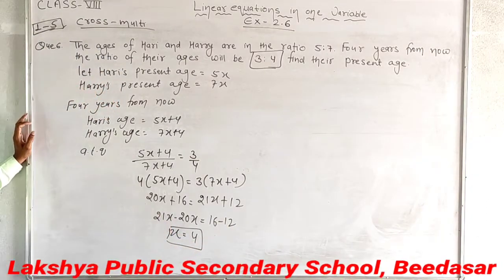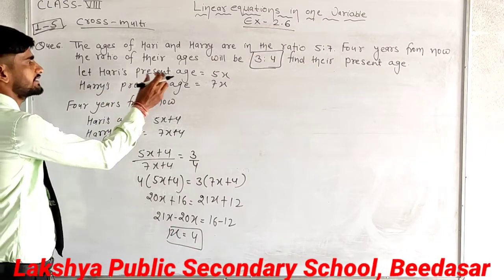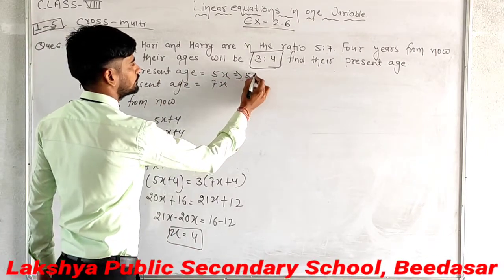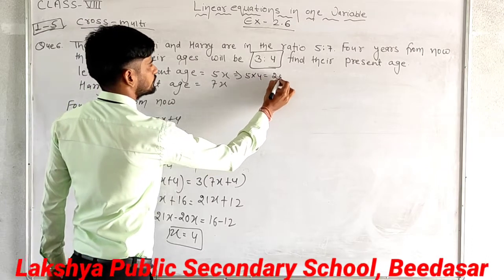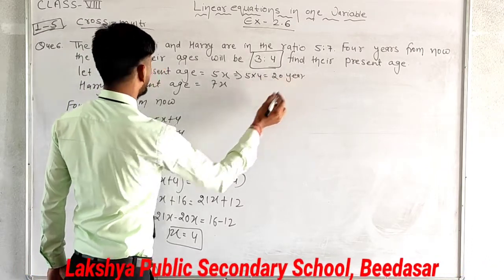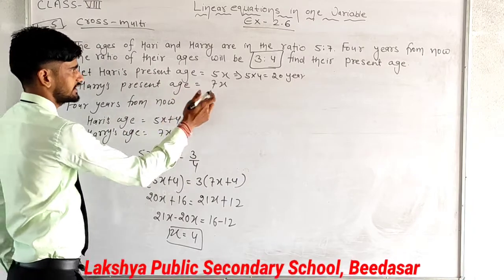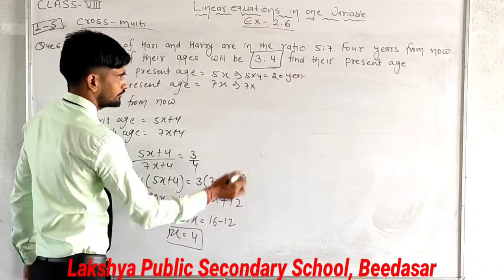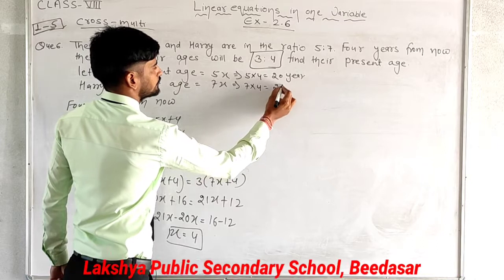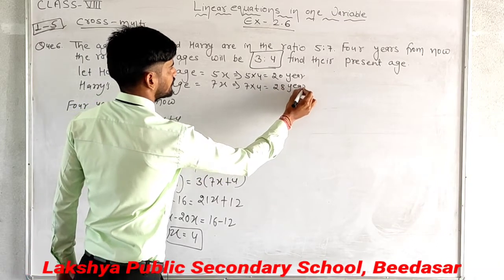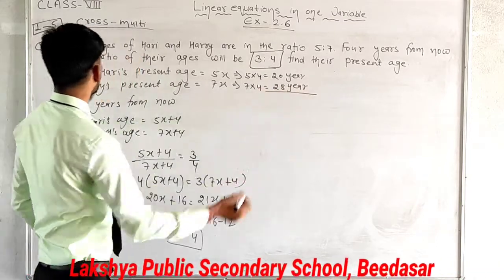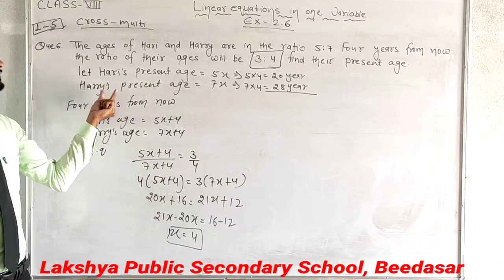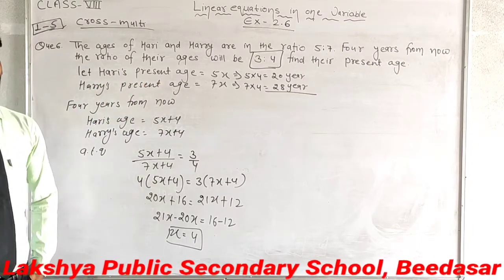We have found the value of x. Now Harry's age is 5x equals 5 into 4 equals 20 years, and Harry's age is 7x equals 7 into 4 equals 28 years. So Harry's age is 20 years and Harry's age is 28 years.